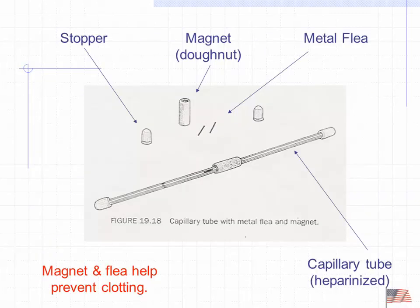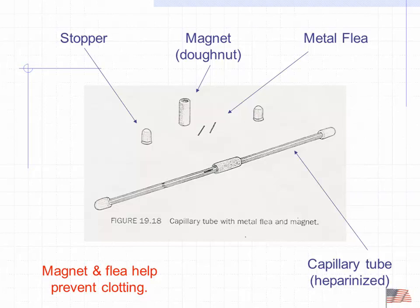The metal flea is a small piece of metal placed into the tube, then rubber stoppers are placed on either end. The magnet goes around the outside of the tube, and by rotating the magnet, the metal flea moves back and forth — this prevents the blood from clotting by keeping it mixed.